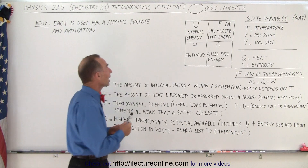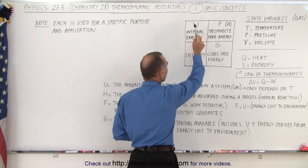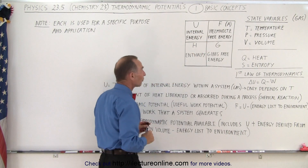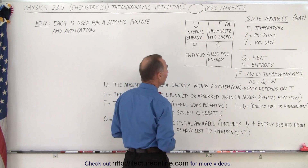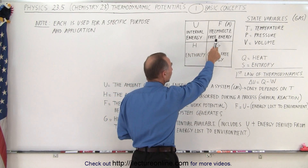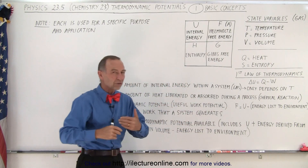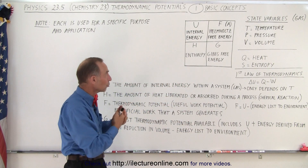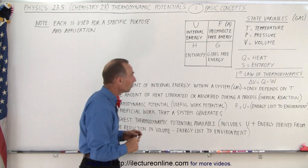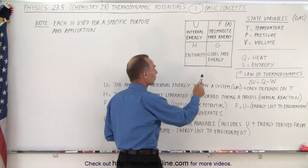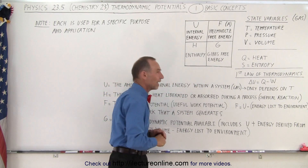The four thermodynamic potentials are: internal energy, represented by the letter U; enthalpy, represented by H; Helmholtz free energy, represented by F or A (both are used interchangeably); and the Gibbs free energy, represented by G.